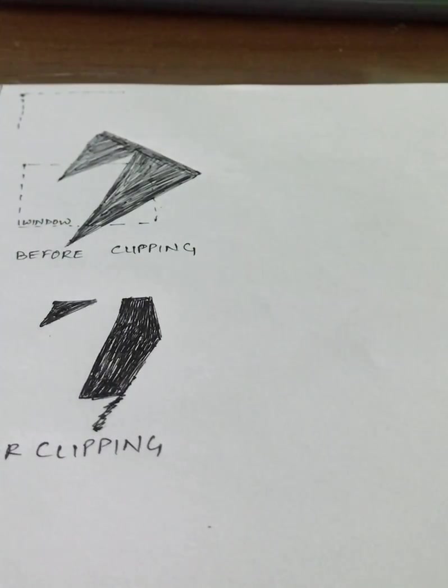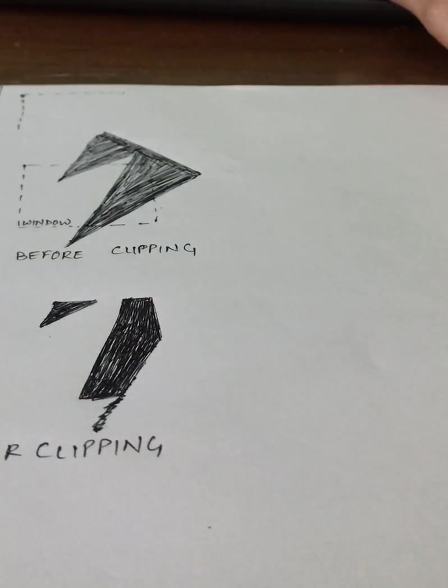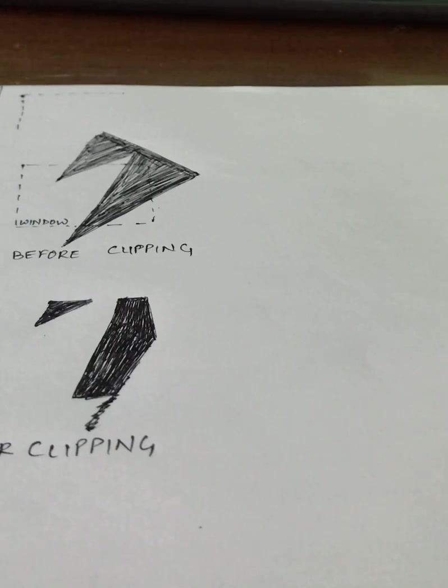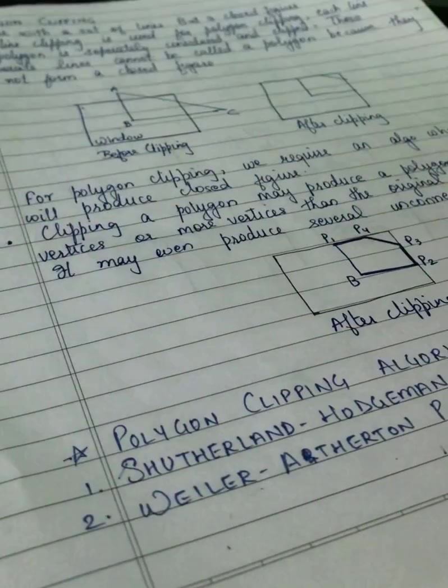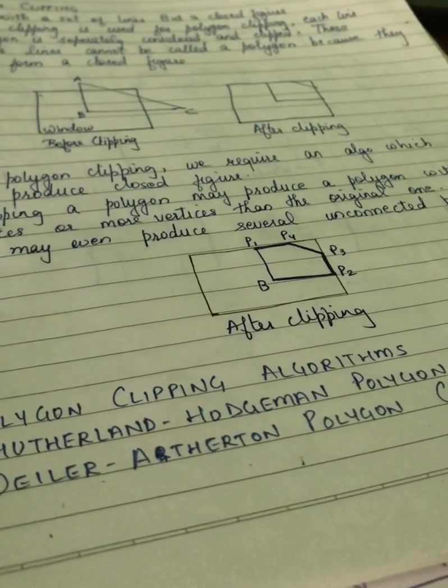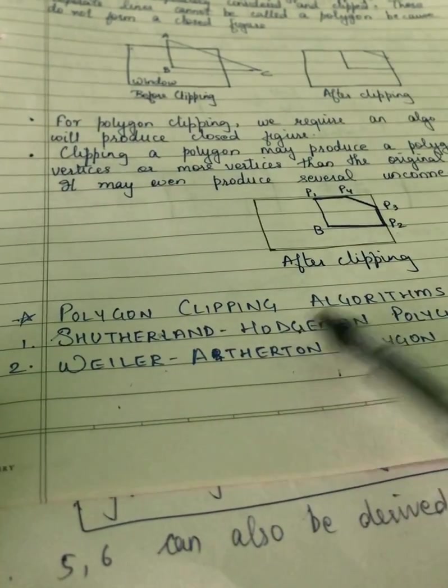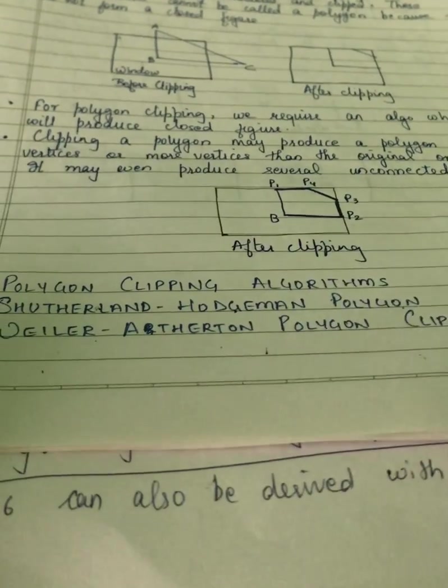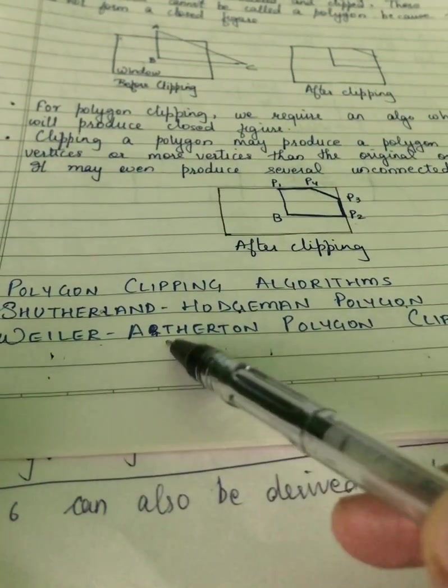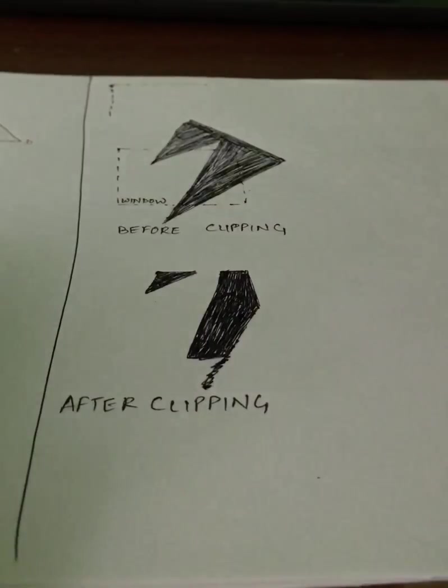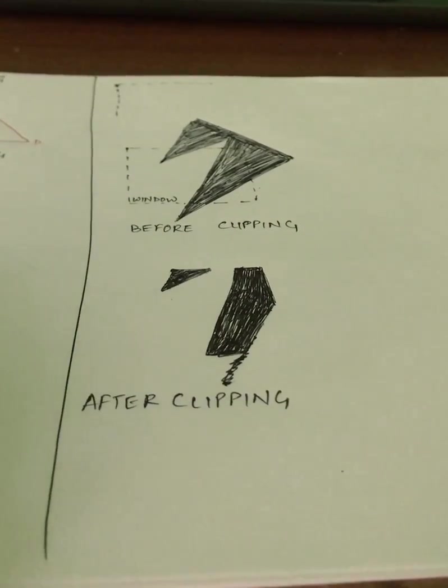Before we start with the polygon clipping algorithms, the two main types of polygon clipping algorithms we are going to do are Sutherland-Hodgeman polygon clipping algorithm and Weiler-Atherton polygon clipping algorithm. Extremely important from exam point of view, they are asked for around 10 to 12 marks in exams.